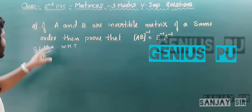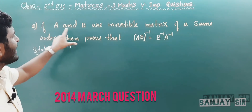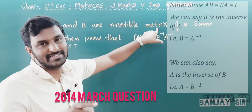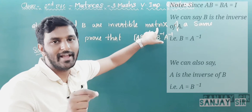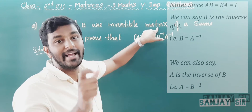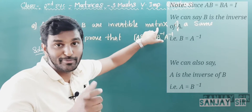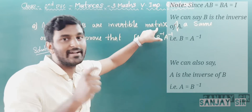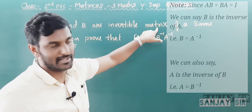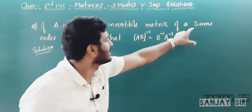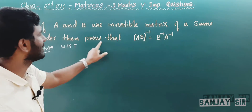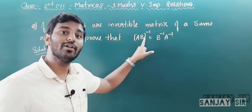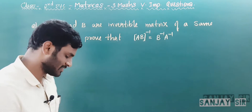The first question: if A and B are invertible matrices — invertible matrix means AB = BA = I, so B is the inverse of A and A is the inverse of B — prove that (AB)⁻¹ = B⁻¹ · A⁻¹.